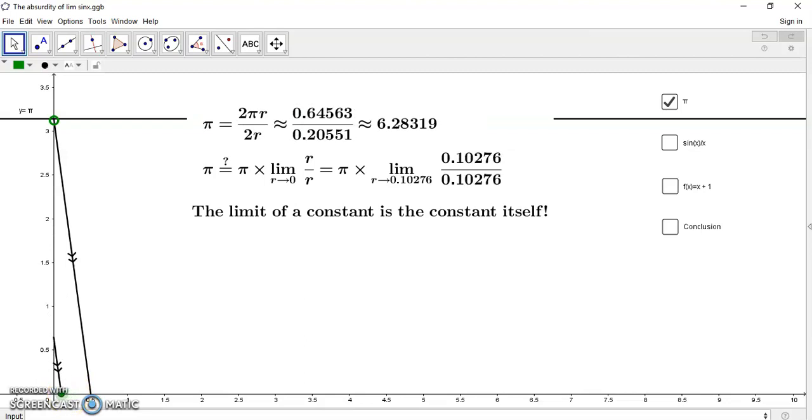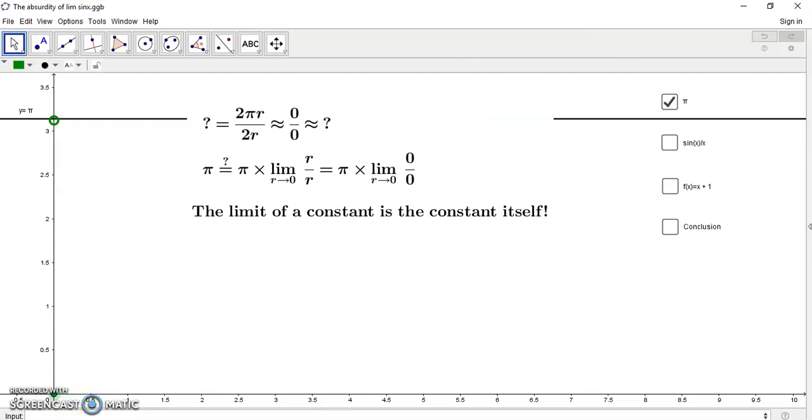So if you try to do something stupid like this, you'll have this fraction 0 over 0, which is not a fraction, it's meaningless nonsense. And supposedly it has a limit that's 1. So mainstream mathematics is such a funny subject. I mean, it's really mythology within mythology. So the limit of a constant is the constant itself.